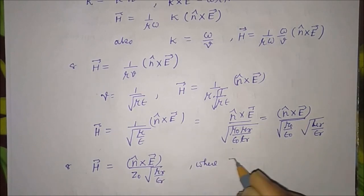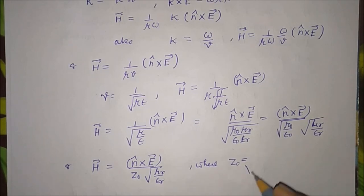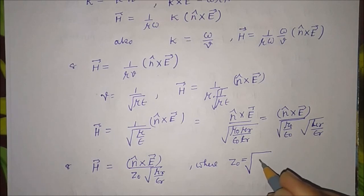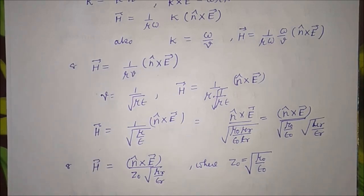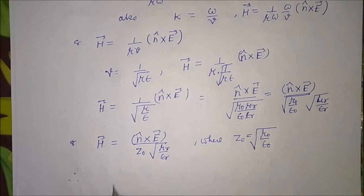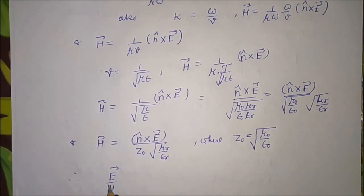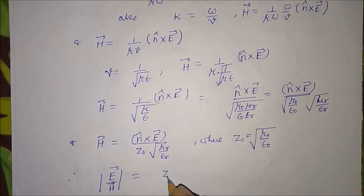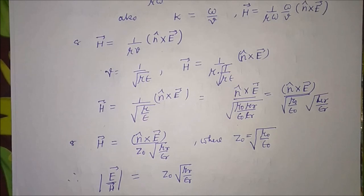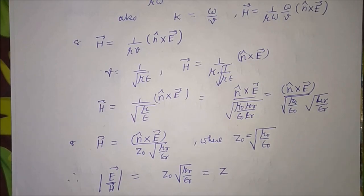Where z₀ equals sqrt(mu₀/epsilon₀) is the intrinsic or characteristic impedance of free space. Therefore, the ratio of the magnitudes E/H equals z₀ times sqrt(mu_r/epsilon_r), which we write as z, the impedance of the medium.